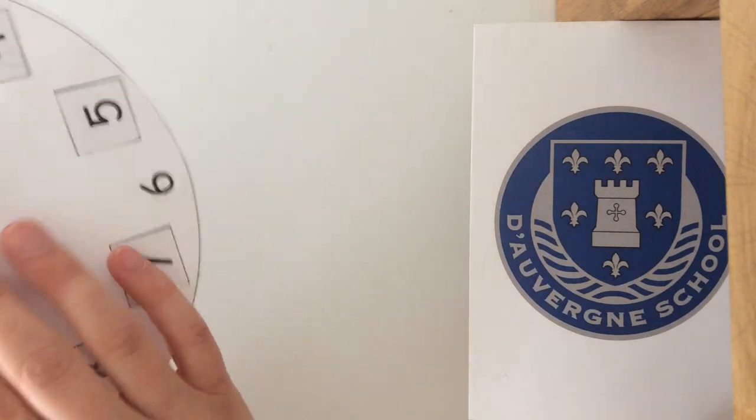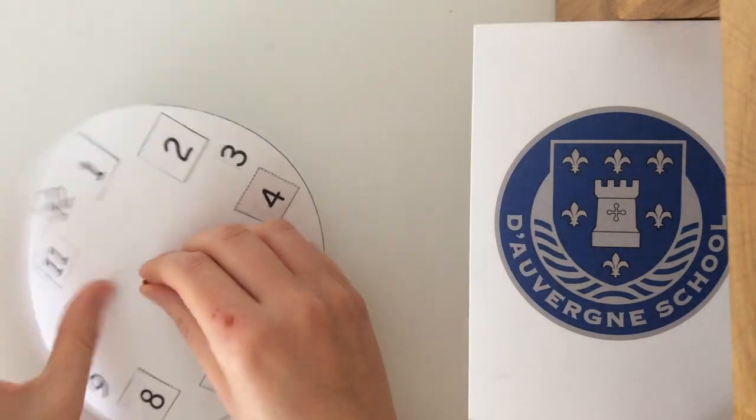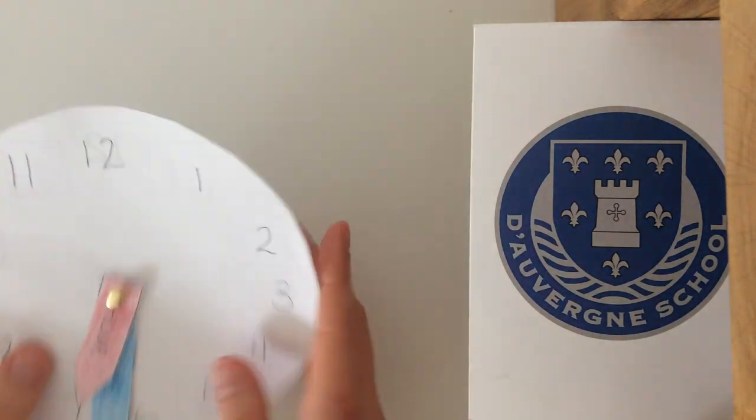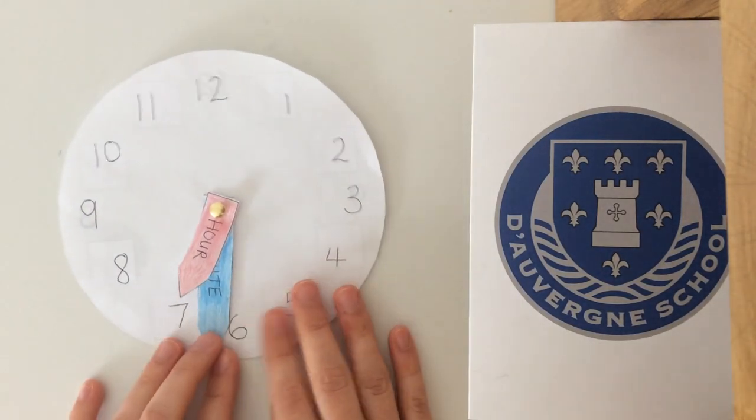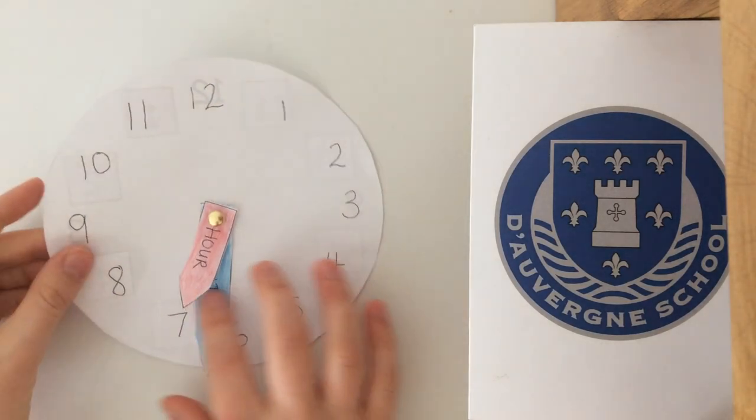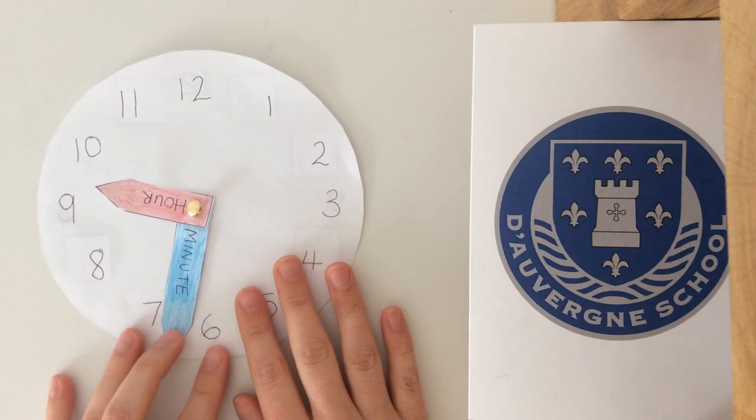You might want to use an earring because you can put the earring through the holes through your clock and then attach the back of the earring. If you can't find anything to attach, you might want to use a piece of string, anything will do. If not, you might want to use a bit of blue tack to just attach the hands when we're telling the time or you can just move them with your fingers. So we've attached our hands to our clock face.